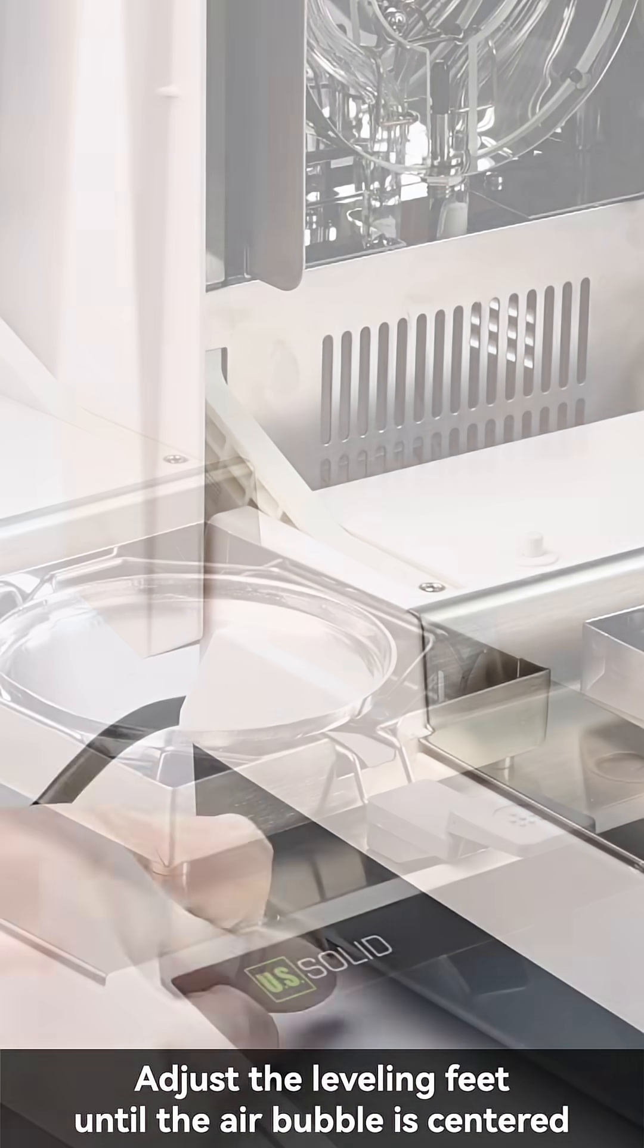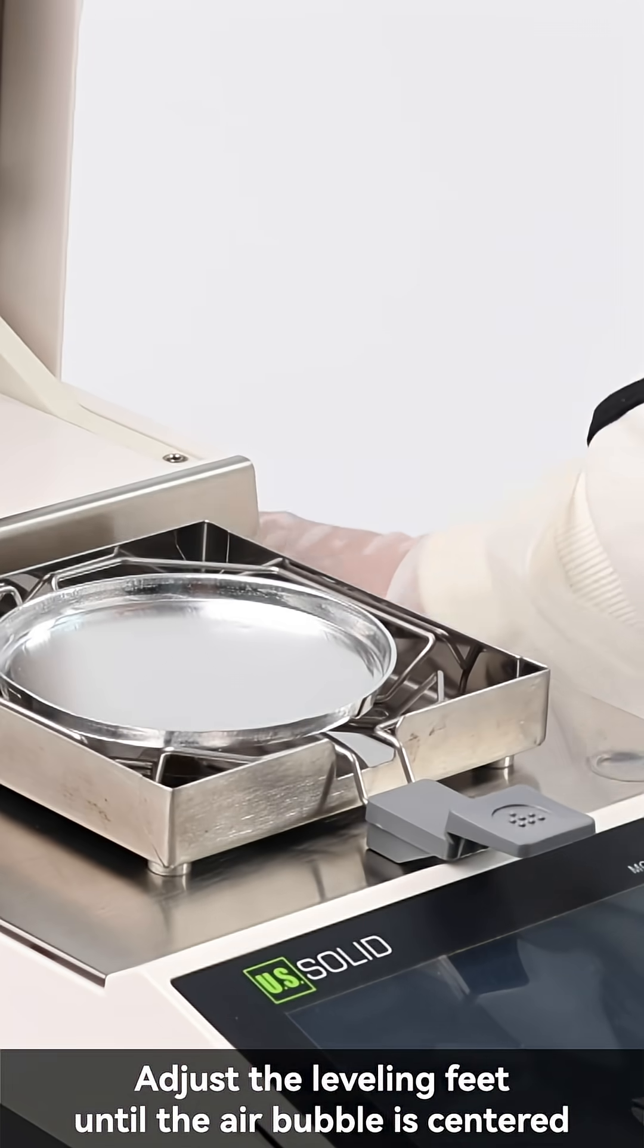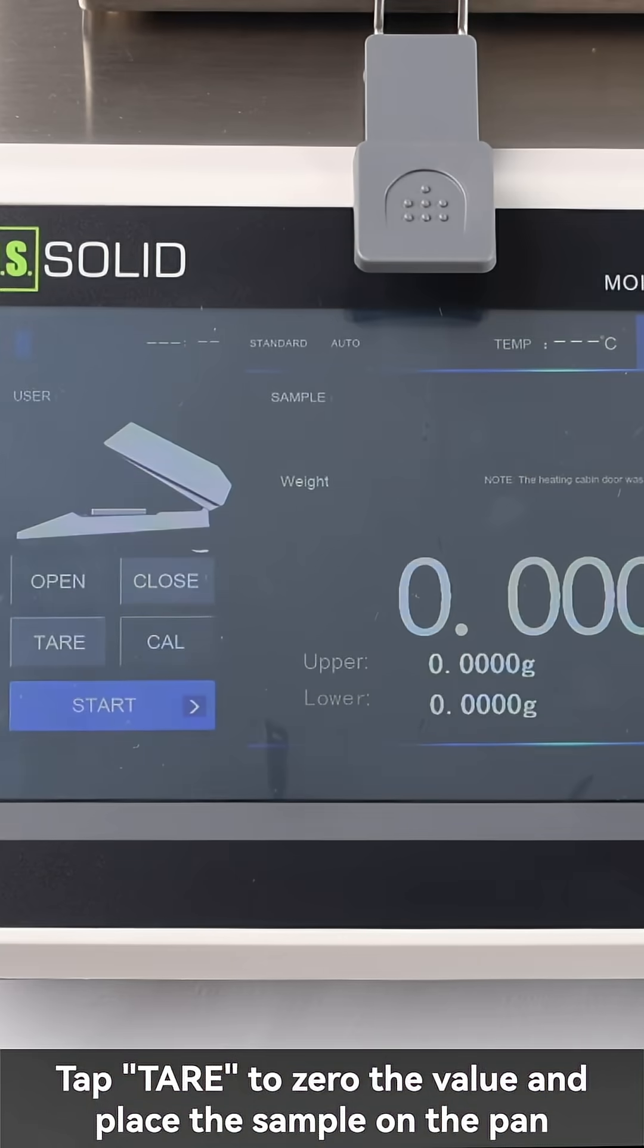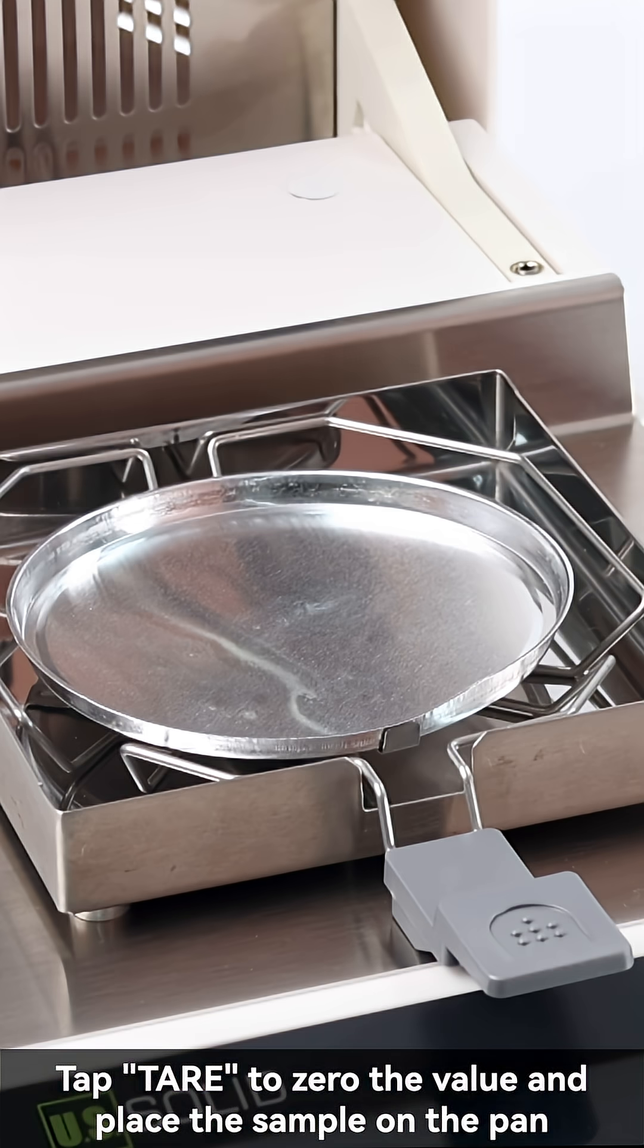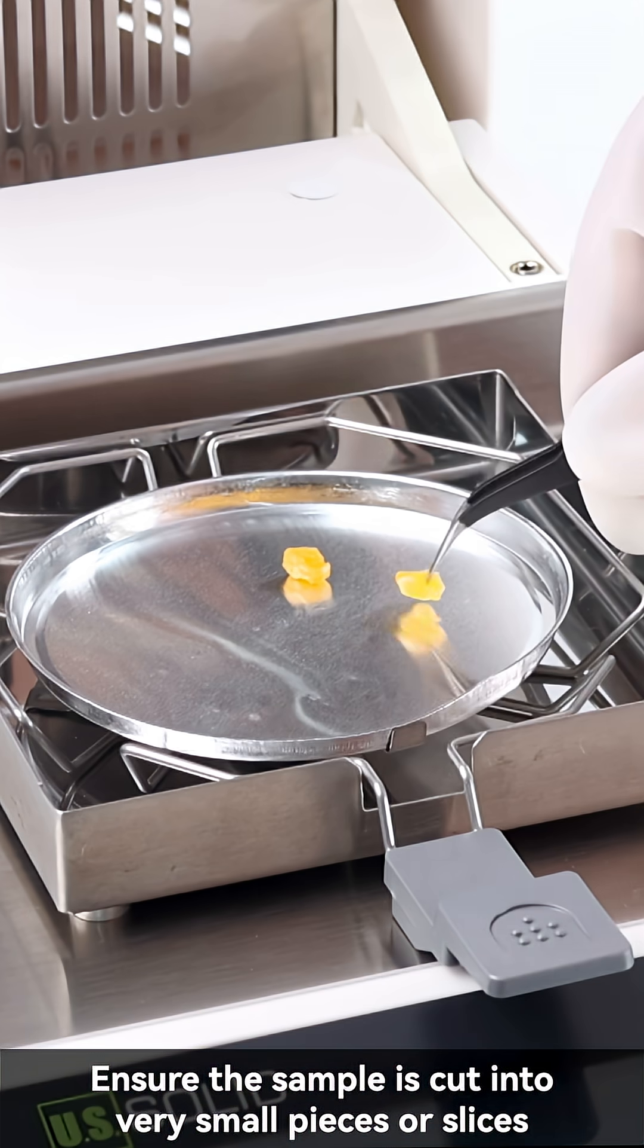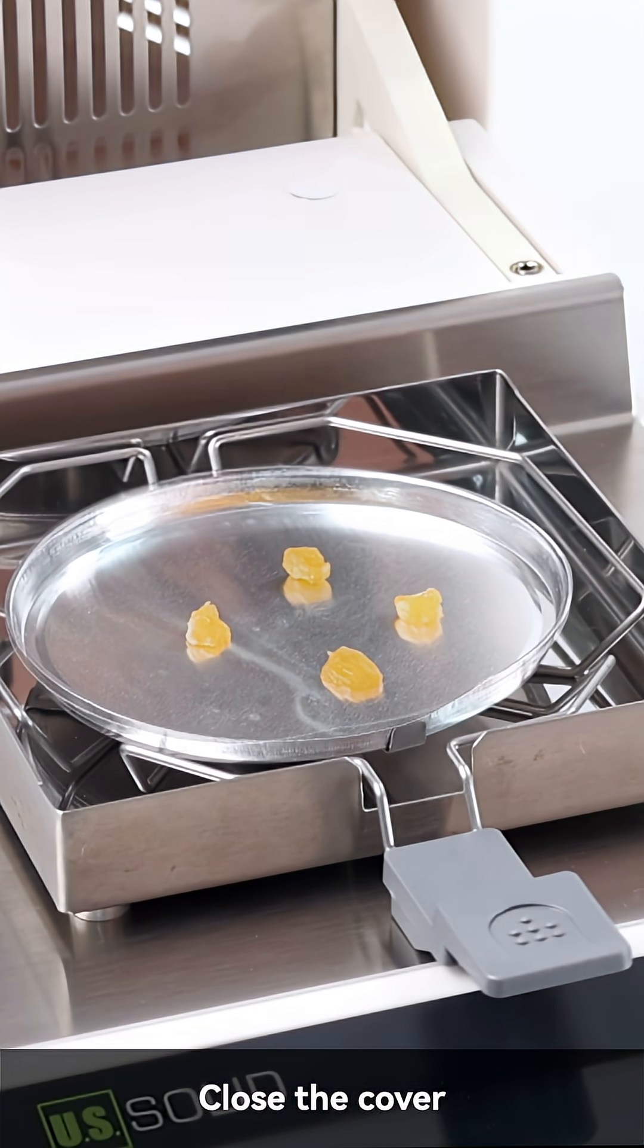Adjust the leveling feet until the air bubble is centered. Tap tare to zero the value and place the sample on the pan. Ensure the sample is cut into very small pieces or slices. Close the cover.